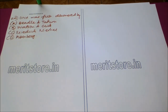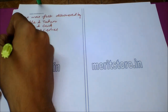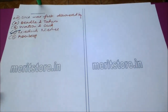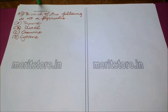The question is: DNA was first discovered by — Option A: Beadle and Tatum, Option B: Watson and Crick, Option C: Friedrich Miescher, and Option D: Kornberg. The correct answer is Option C: Friedrich Miescher. The structure of DNA was proposed by Watson and Crick.